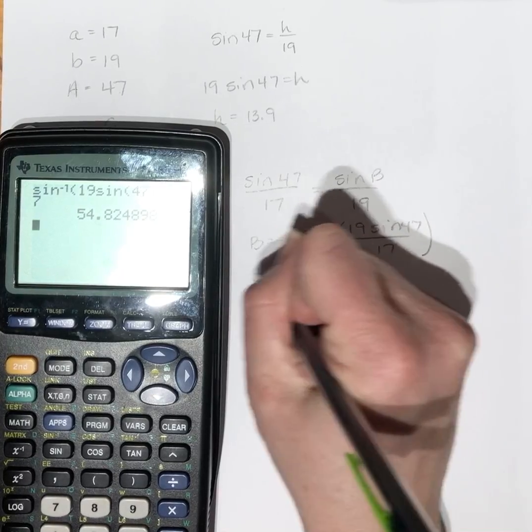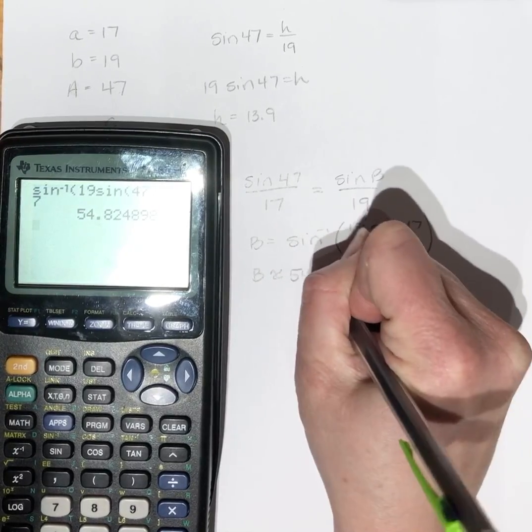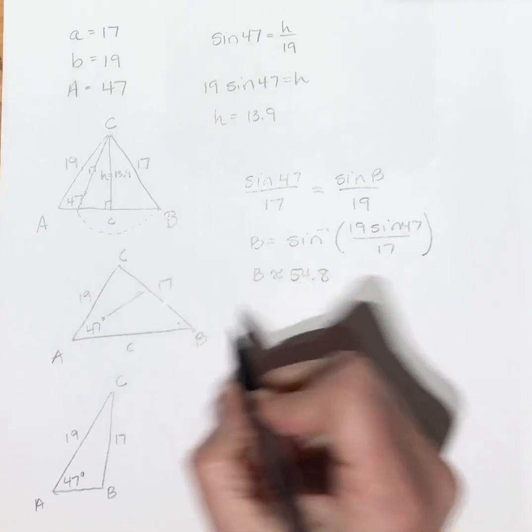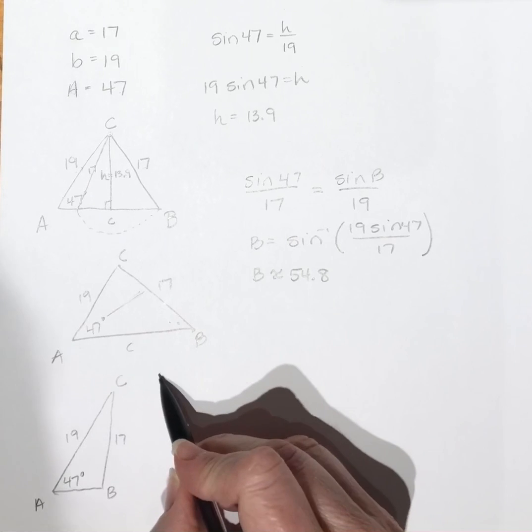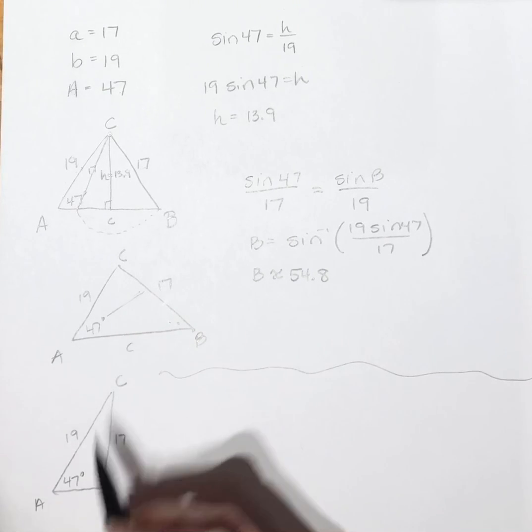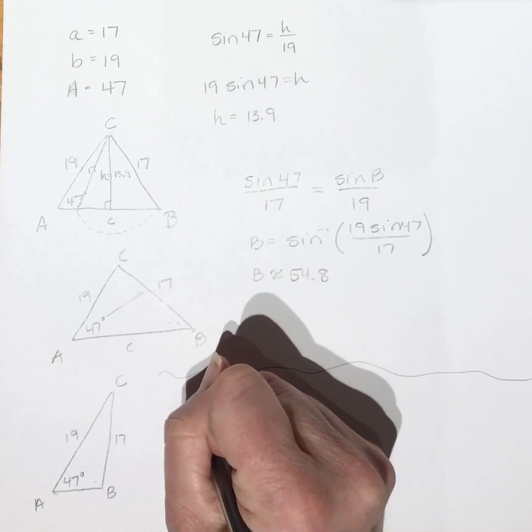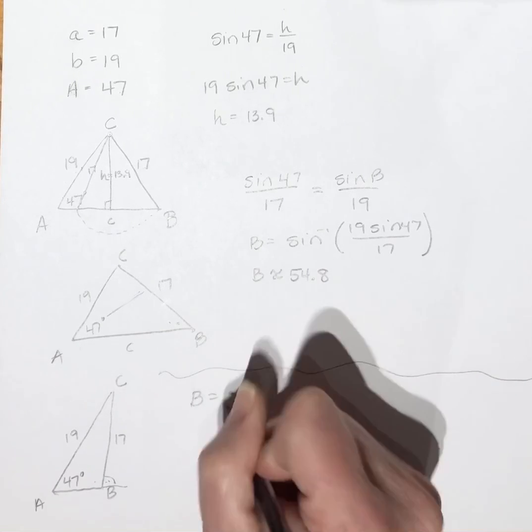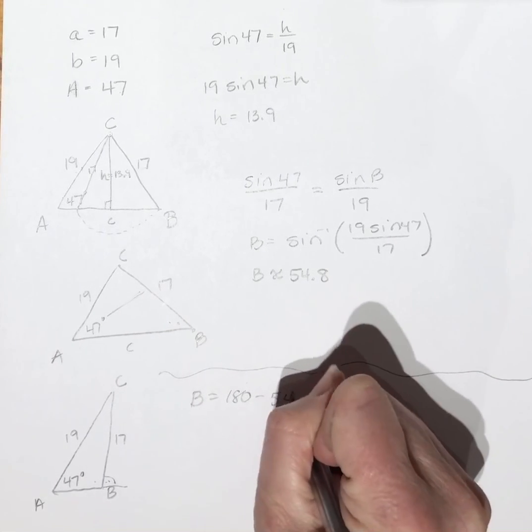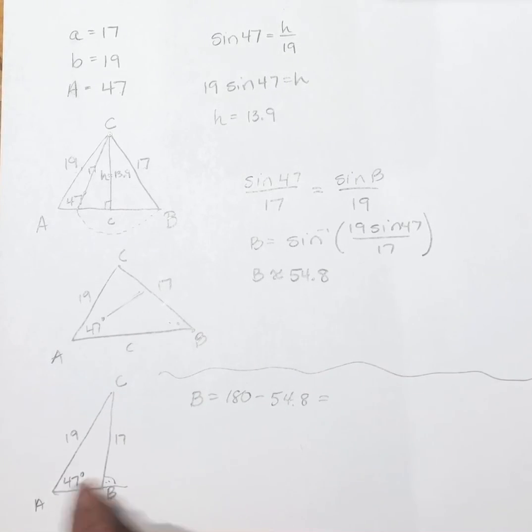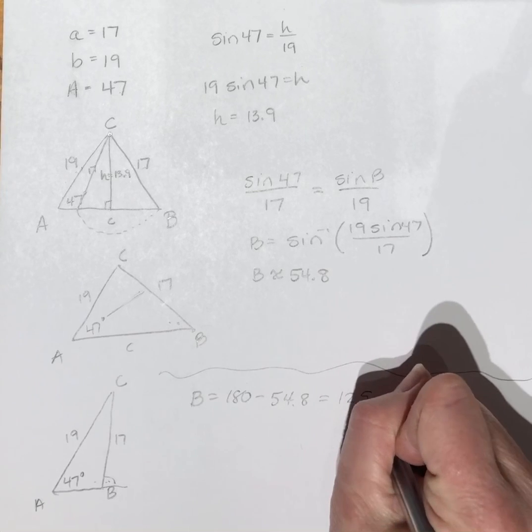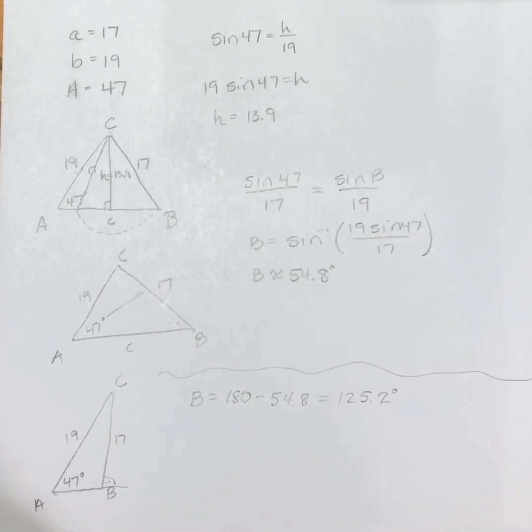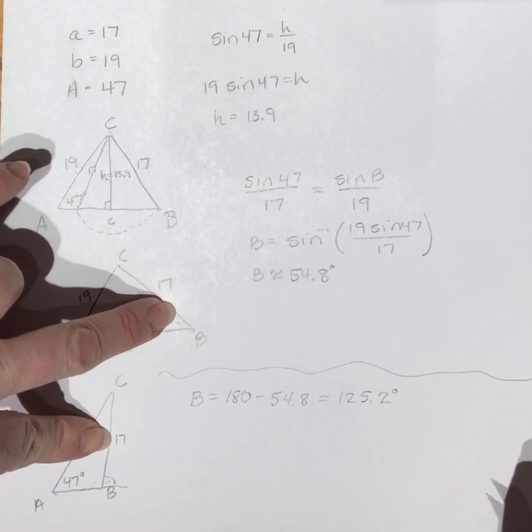So angle B is approximately 54.8. Okay, so this angle here is 54.8. I'm going to have two different triangles. How do I get my obtuse angle? This angle here is 54.8, so I take 180 minus 54.8 to get my other angle B, my obtuse angle B. And I get 125.2 degrees.